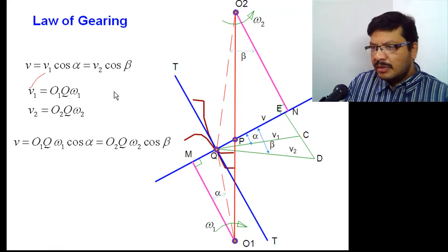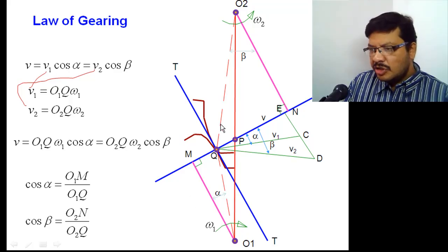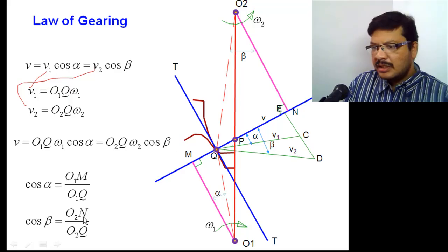Now, if you substitute V1 value here and V2 value here, you will get the equation something like this. In this equation, cos alpha and cos beta are unknowns now. To get cos alpha and cos beta, you have to use geometry of this figure. Observe cos α equal to O1M divided by O1Q. Cos β equal to O2N divided by O2Q.